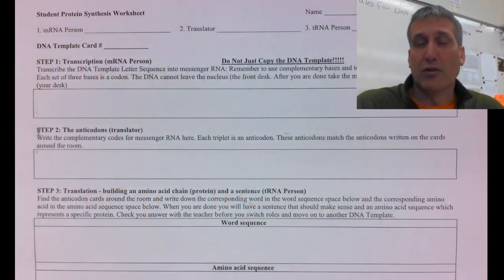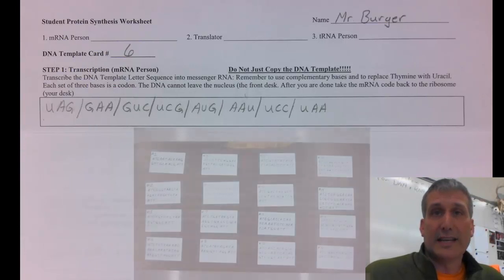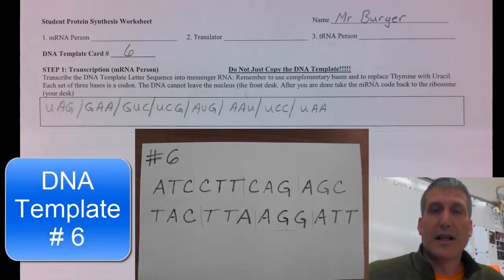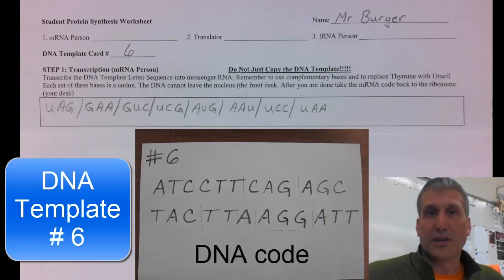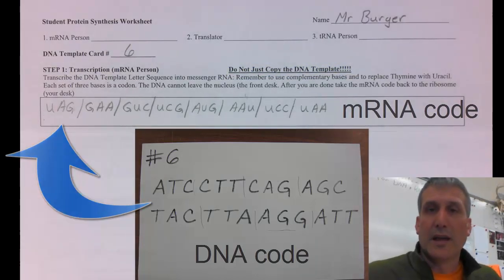I will now walk you through one of these so you get a really good idea of the process and deepen your understanding of protein synthesis. You start by the first person, the mRNA person, taking the sheet to the DNA table and choosing one of the blue DNA template cards. In this example, I've chosen template card number six. That card contains a DNA code, but you do not just copy the DNA template in step one. The mRNA person needs to transcribe the DNA code into the messenger RNA code, which is shown here.